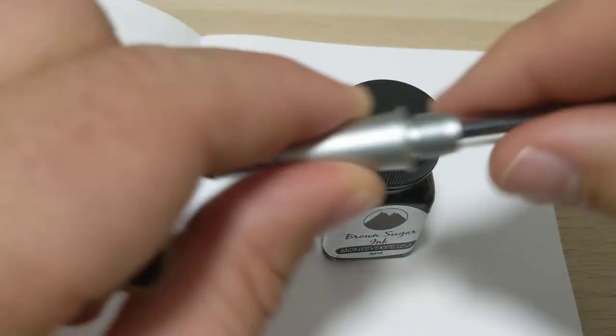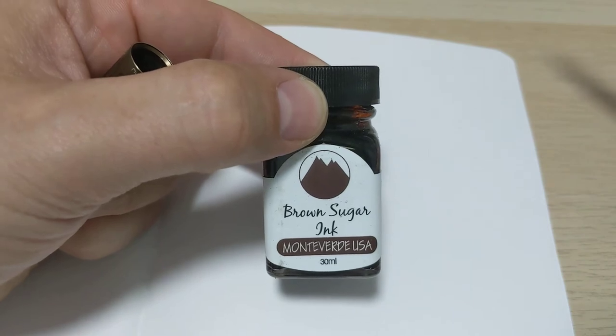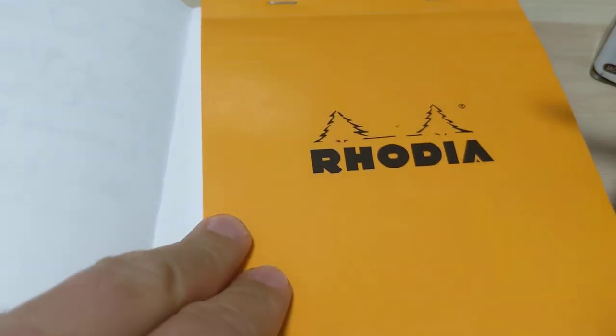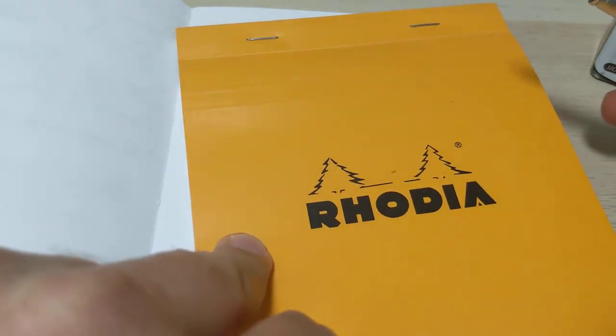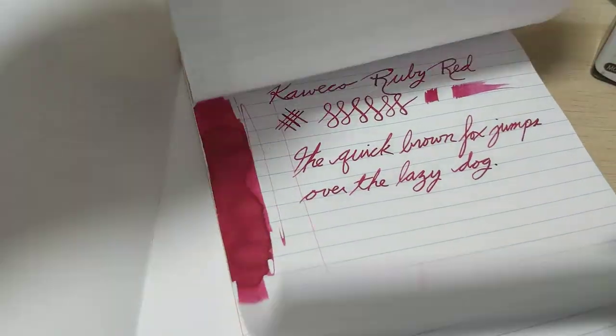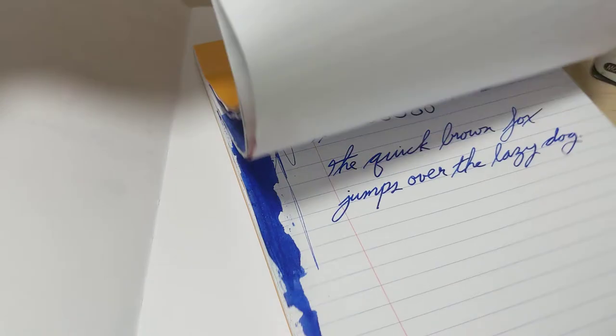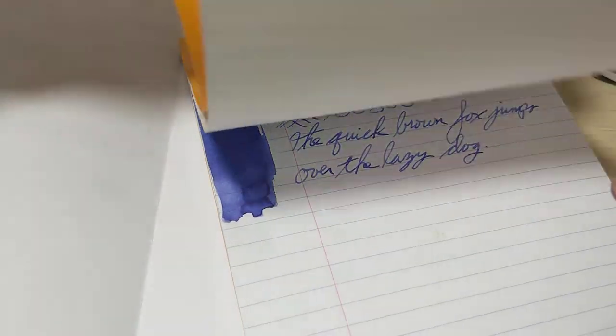Today we're going to use Monteverde Brown Sugar. This is just a sidebar - if you want to see more of this, leave a comment and I'll do a quick video. I have a little ink cyclopedia with samples of all my inks. Sometimes you want to put a certain ink inside a pen and you're not sure what to choose. It's a good idea to have one handy - anytime you get a new ink, just make a quick writing note about it.